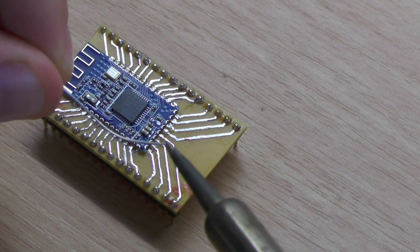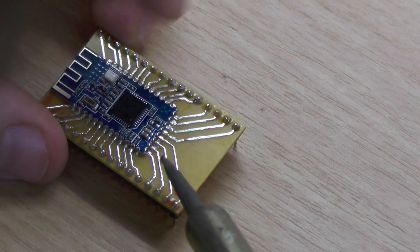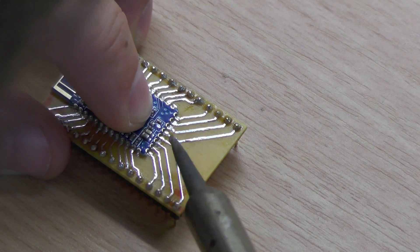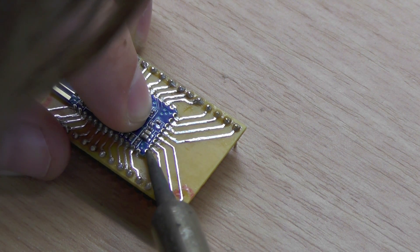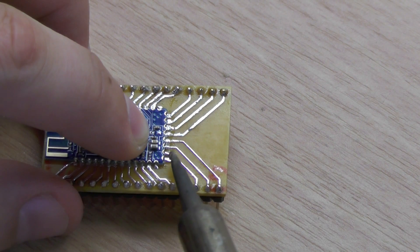Soldering surface mount devices is a bit more complicated. You can fix the device by soldering two pins of opposite corners. This will avoid that it moves around and you can concentrate on soldering each pin.